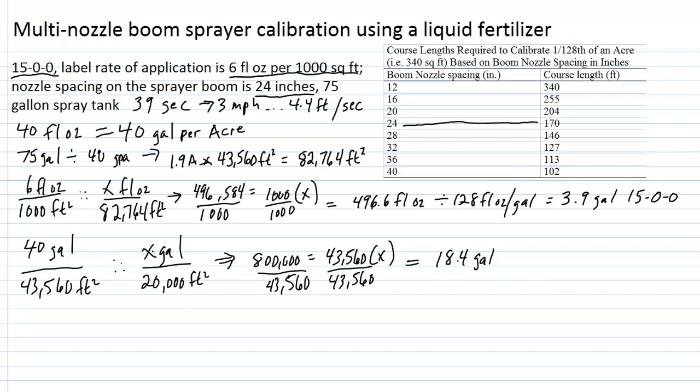So, let's do that next, and again, we're just basically going to repeat the steps that we've done here, except we're going to use only 20,000 square feet in our proportion. So, 6 fluid ounces of 15-0-0 is to 1,000 square feet, as X fluid ounces would be for 20,000 square feet. Again, everything matches up, fluid ounces on top, square feet on the bottom.